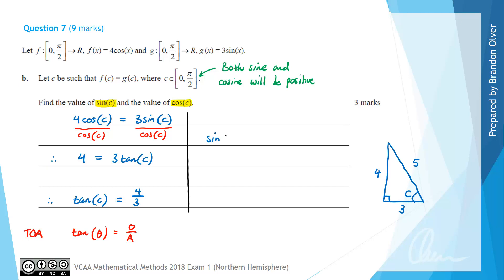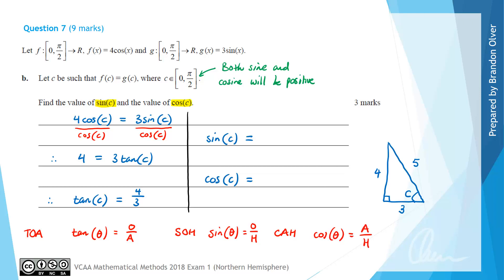Our job now is to find the value of sin(C) and cos(C) using this right-angle triangle. From SOH-CAH-TOA: sine of an angle equals opposite over hypotenuse, and cosine equals adjacent over hypotenuse. So sin(C) = 4/5 — the opposite is 4 and the hypotenuse is 5. And cos(C) = 3/5 — the adjacent is 3 and the hypotenuse is 5. Those are the values we were asked to find.